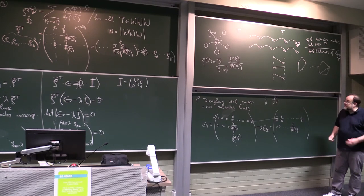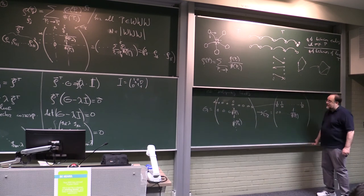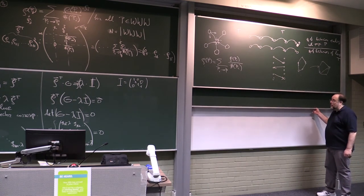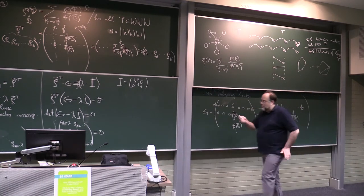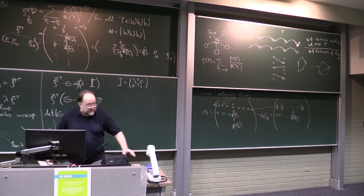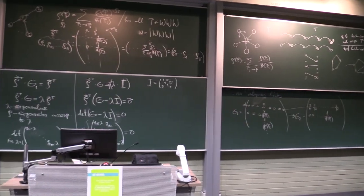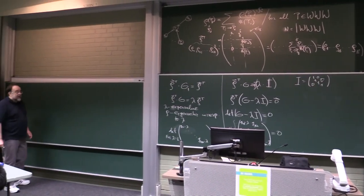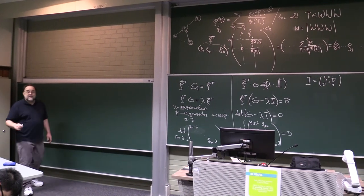Matrix G2 is the same as the previous matrix, except that at dangling web pages, zeros are replaced by 1 over N. This is the first surgery. The next surgery is to avoid getting trapped in traps and having the cyclicity problem.